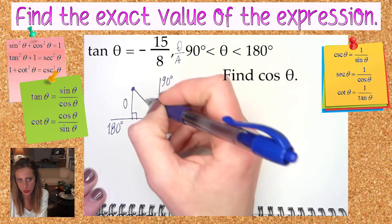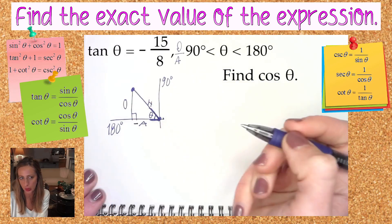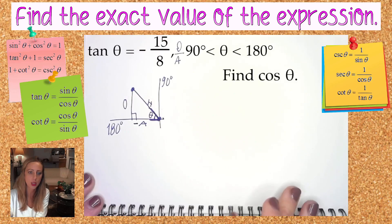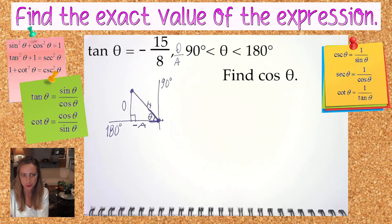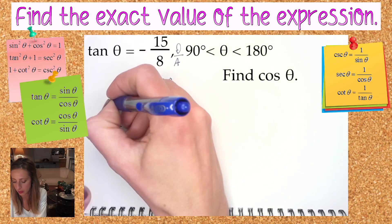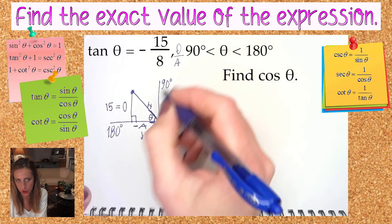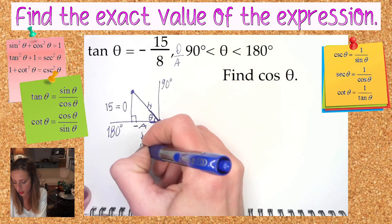The hypotenuse is always positive. The adjacent in this case will be negative because we're going to the left, and the opposite is positive because we're going up. Okay, well, now what? Opposite over adjacent. So the opposite is going to be associated with the measure 15.